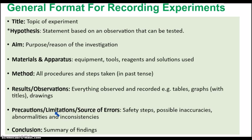Limitations are influences the researcher cannot control — things like faulty equipment, limited time, sample size, environmental conditions such as temperature and light. Sources of error include improper techniques in handling apparatus or making measurements — these are human errors. For example, measuring volume on a measuring cylinder must be done at eye level; reading it incorrectly results in a parallax error. Finally, the conclusion or inference summarizes the findings of the experiment.